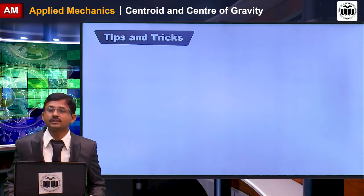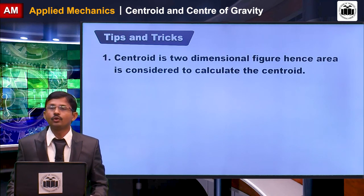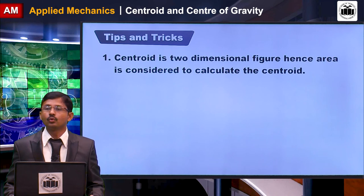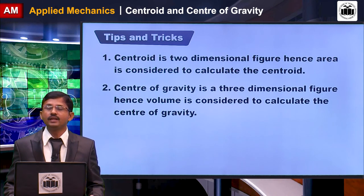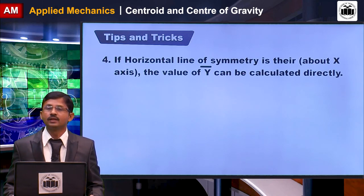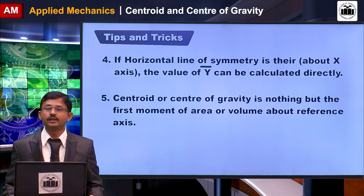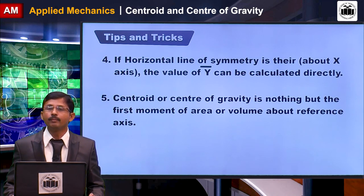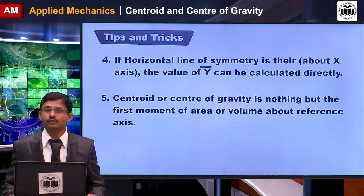Here are some tips and tricks regarding centroid and center of gravity. Centroid is a 2D concept — area is used to calculate it. Center of gravity is a 3D concept — volume is used. If a vertical axis of symmetry exists about the y-axis, x-bar can be calculated directly. If a horizontal axis of symmetry exists about the x-axis, y-bar can be calculated directly. The centroid or center of gravity is essentially the first moment of area or volume about the reference axis. Remember the basic formulas for solid sections as well as areas.